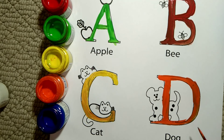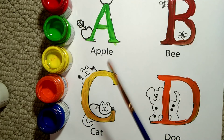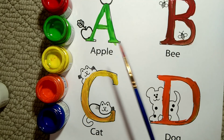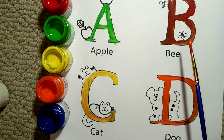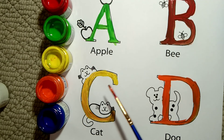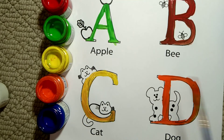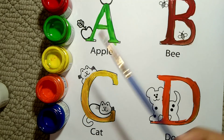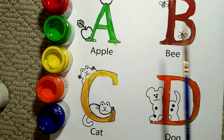D. D for dog. Green color, red color, yellow color, orange color. A for apple,